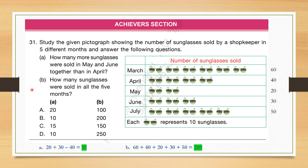Now we are in the Achievers section. Question number 31: Study the given pictograph showing the number of sunglasses sold in 5 different months — each symbol represents 10. So March: 60, April: 40, May: 20, June: 30, July: 50. Part A — how many more sunglasses were sold in May and June together than April? May + June = 20 + 30 = 50, minus April 40, result is 10. Part B — total sunglasses in all 5 months: 60 + 40 + 20 + 30 + 50 = 200. Correct answer is 10 and 200, option B.